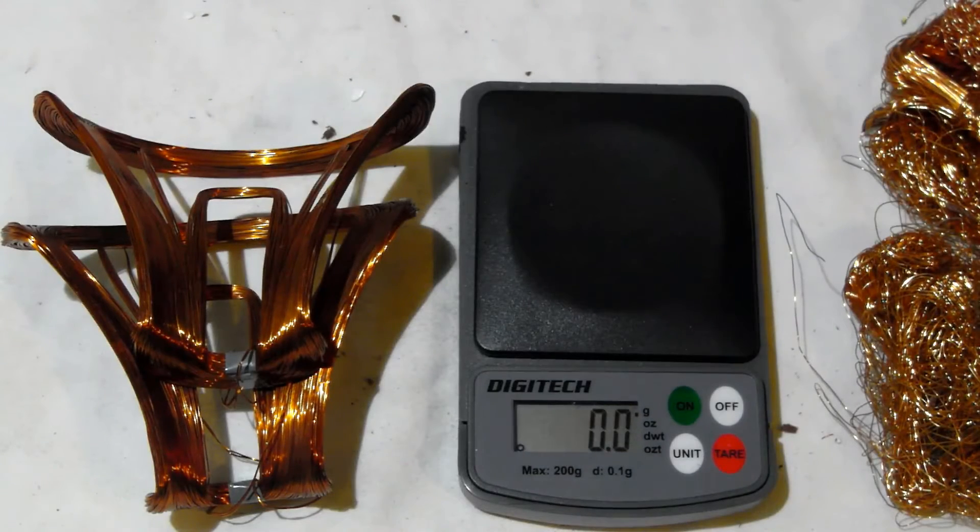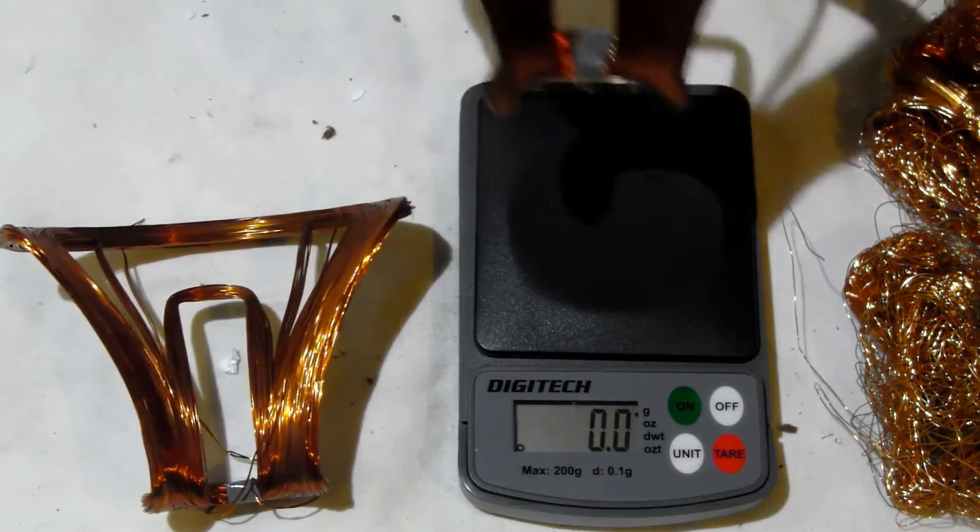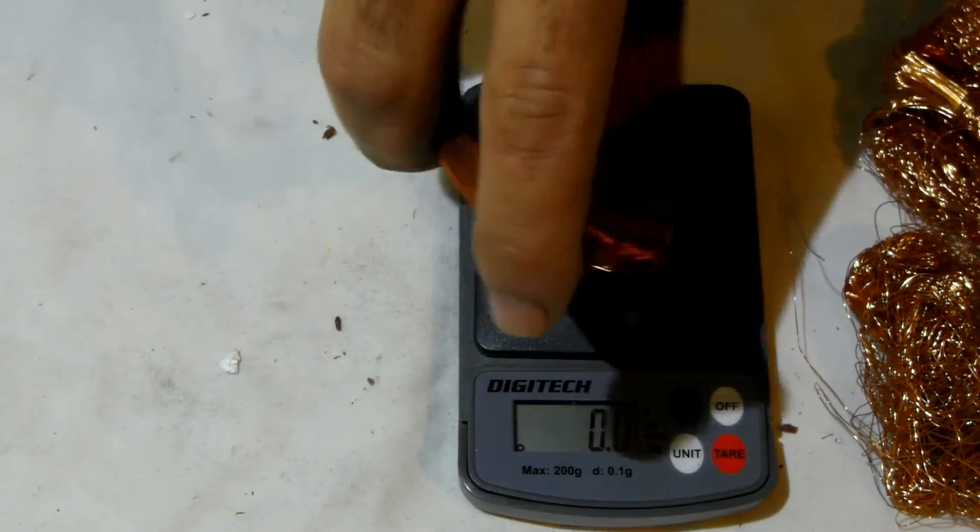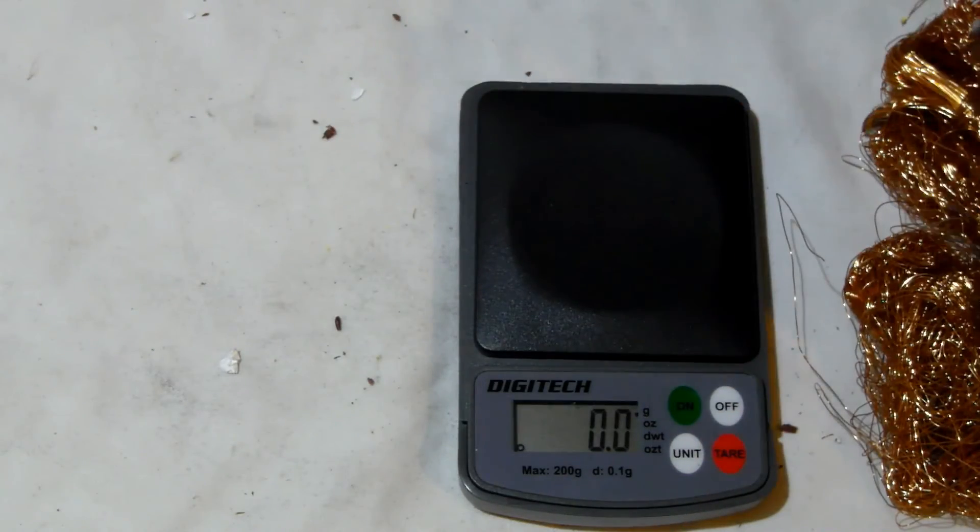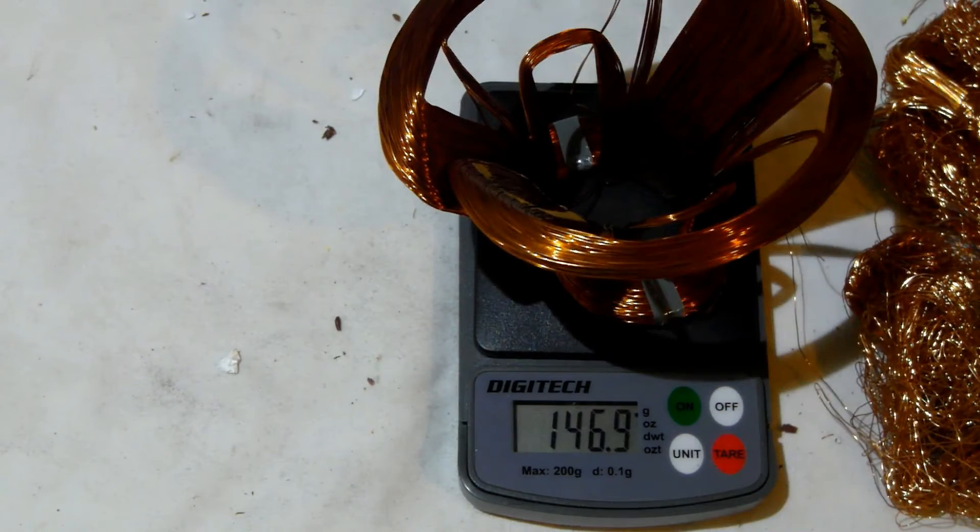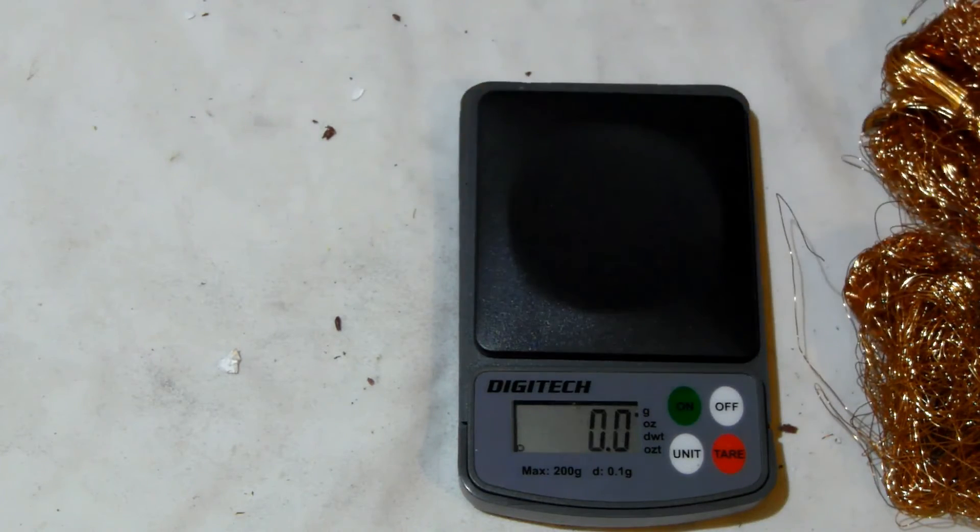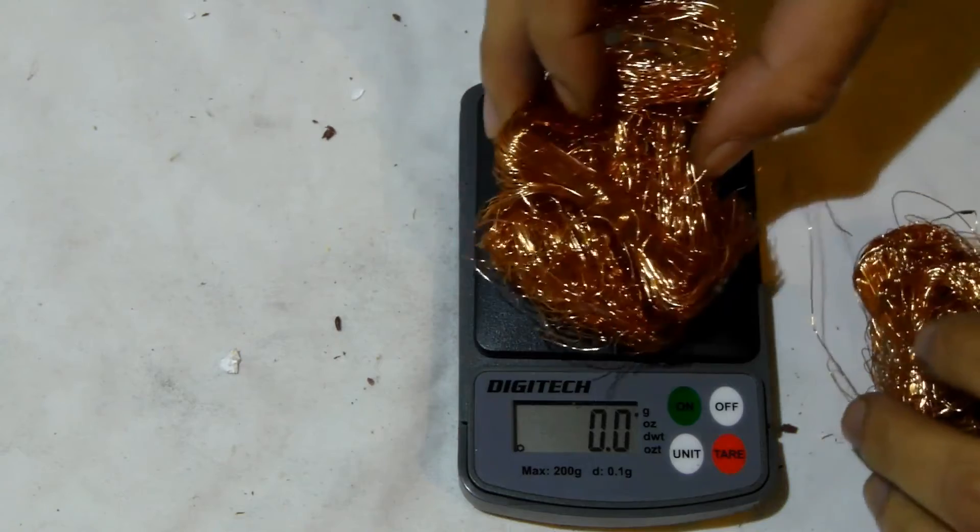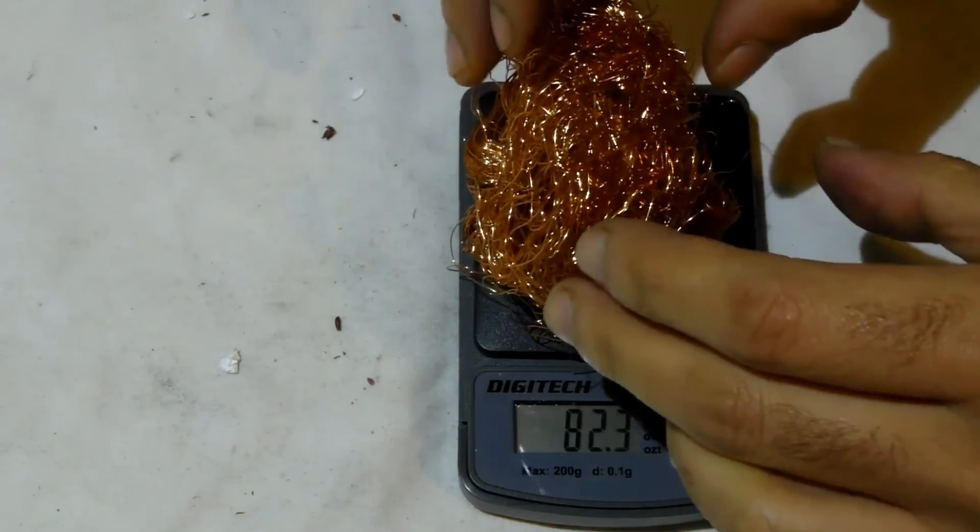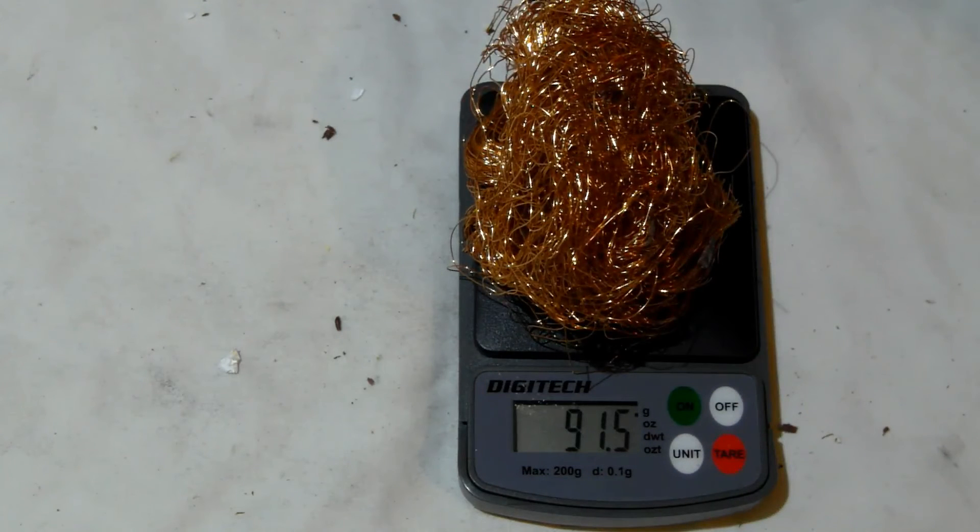Okay, now we're going to weigh the copper and see what we've got. So that's our two halves. That's 140, let's say 147 grams. And these are from the outer winding. That's 91 and a half.